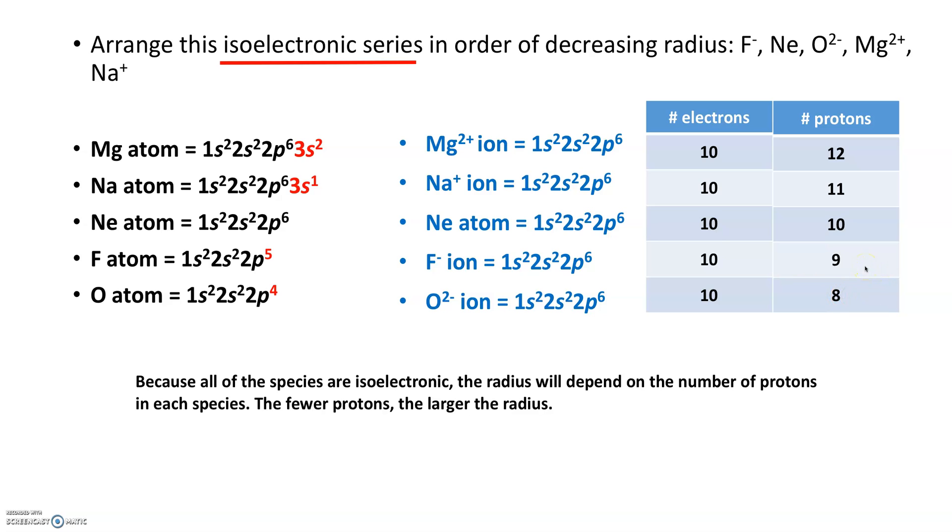Now we just need to rank them. It's obvious the 12 protons are going to pull better on the 10 electrons than the 8 protons could do on the 10. There's more protons pulling on fewer electrons here; there's less protons pulling on more.